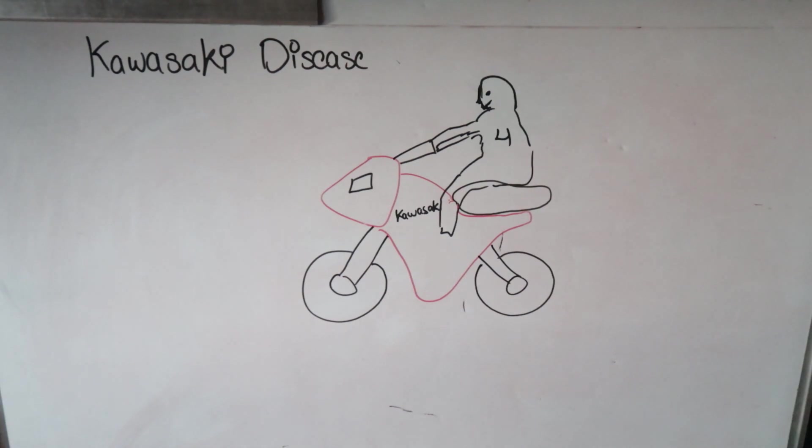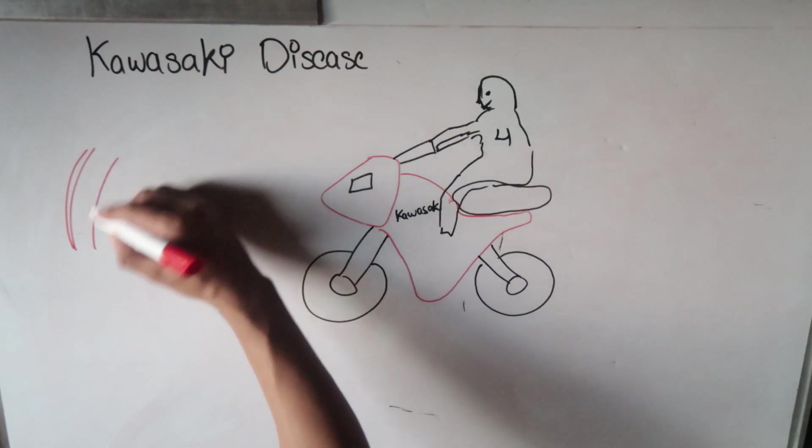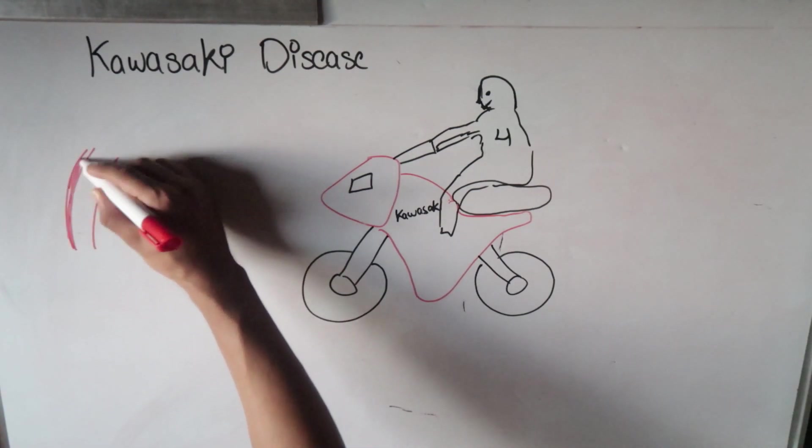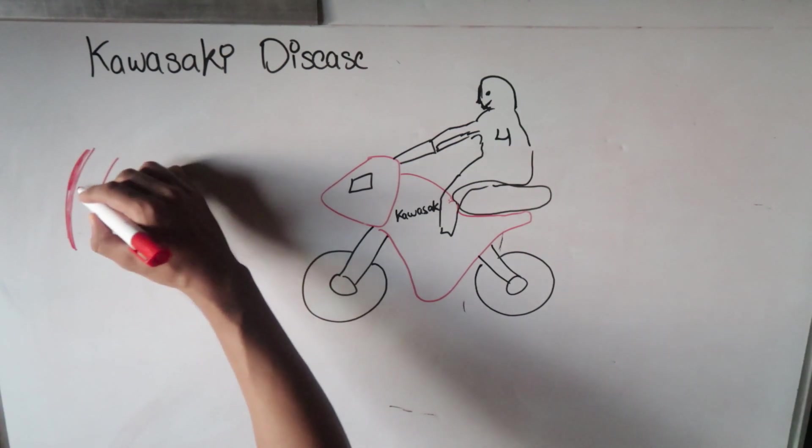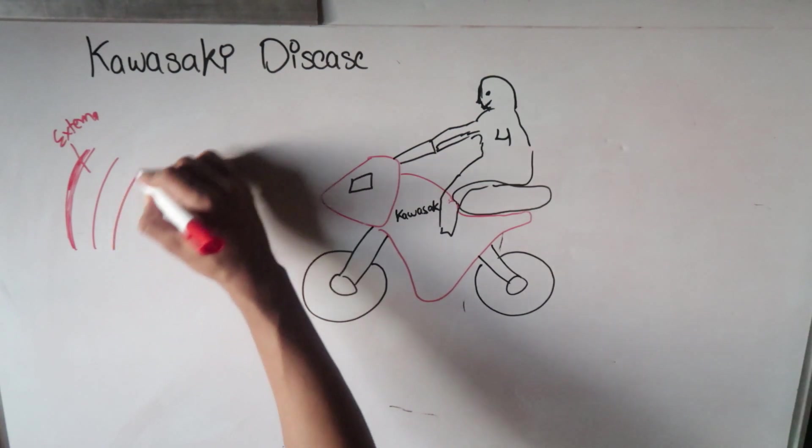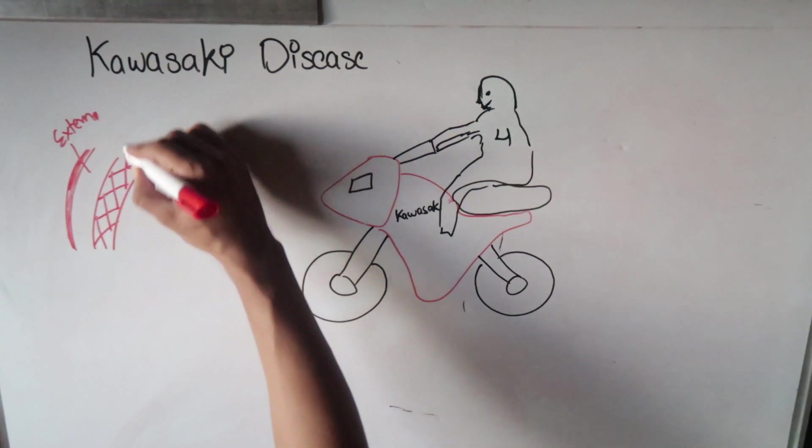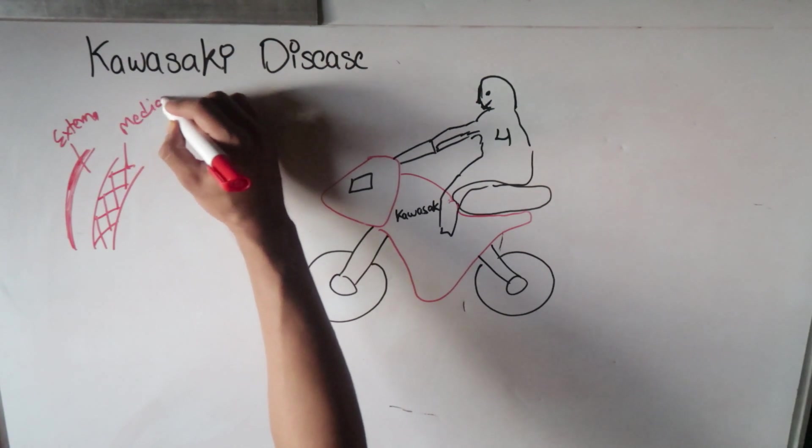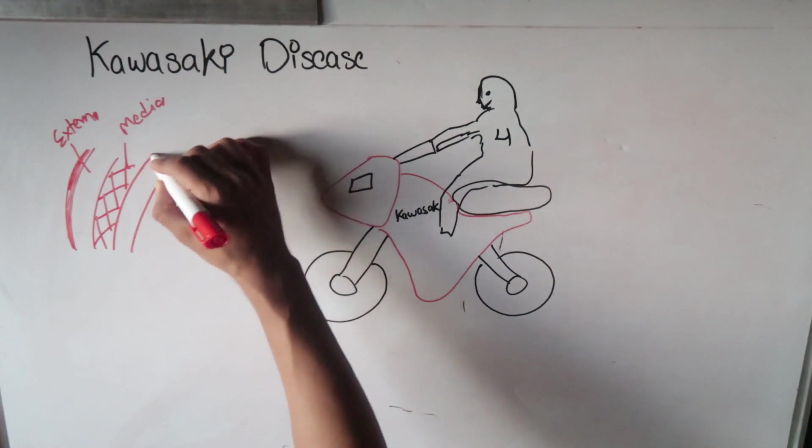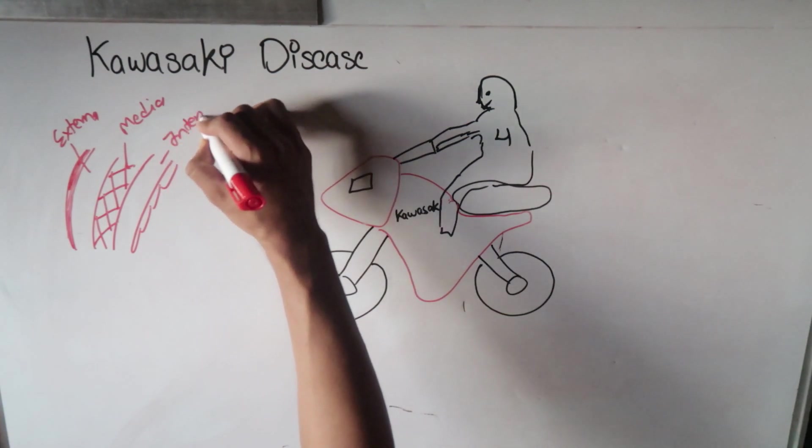It mainly affects the endothelium of the blood vessels. You know that we have three main layers of the blood vessels. Here I'm drawing the layers of blood vessels. This I'll label as tunica externa, the muscle layer is tunica media, and the innermost part here is the tunica interna.